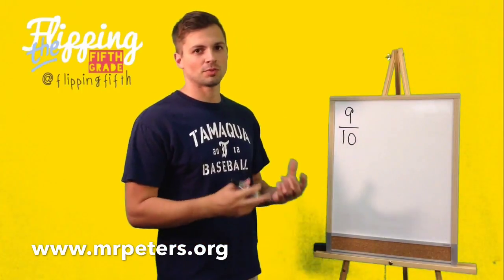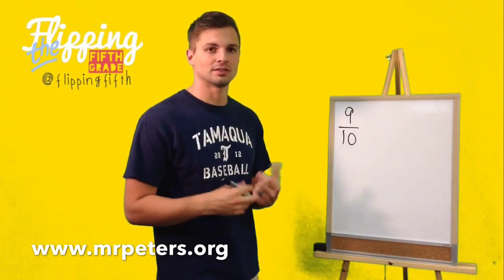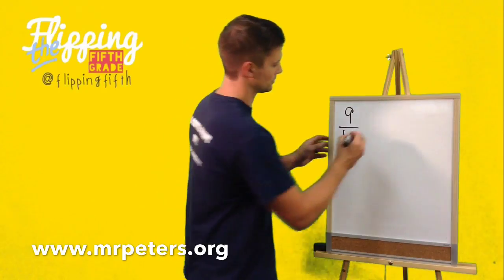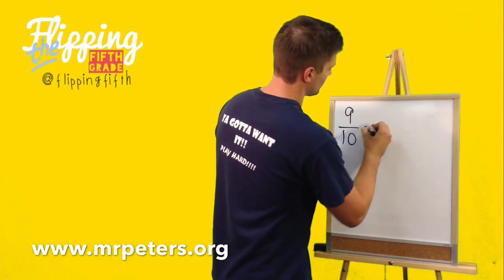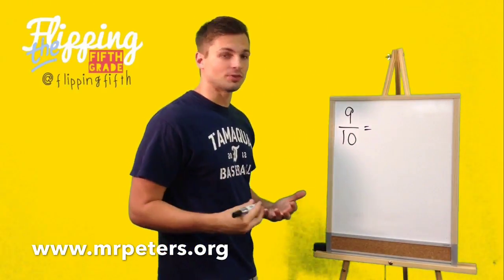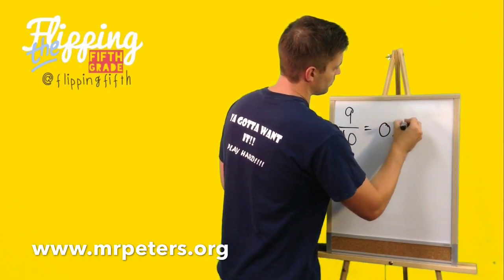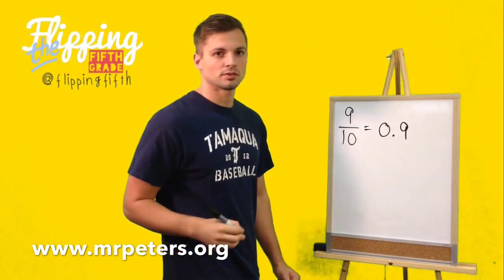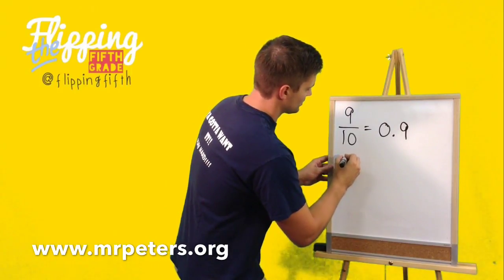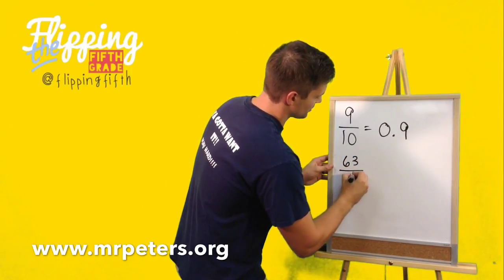Can you tell me what 9 tenths would be in decimal form? If you just say it, you can get your answer — 0.9. Now let's try 63 hundredths.